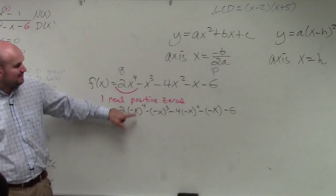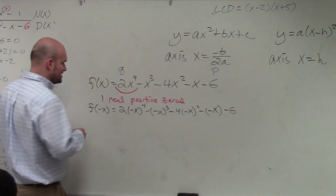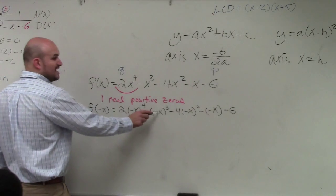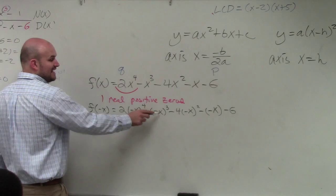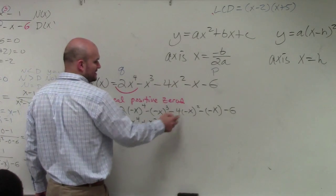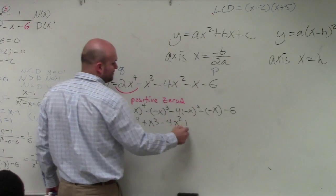And just remember, any negative number raised to an even power is always going to be positive. So therefore, this turns out to be still a positive 2x to the fourth. Any negative number raised to an odd is now negative. Negative times negative is positive. Positive, now it's a negative.